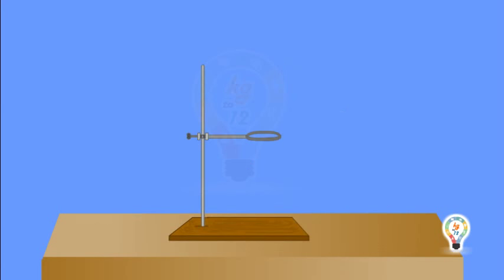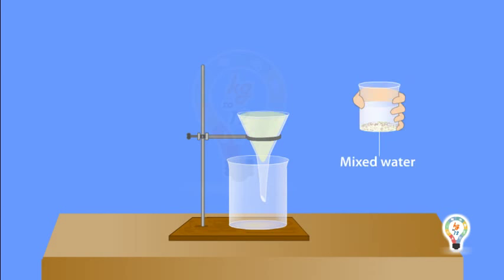To separate the mixture of sand and water by filtration, take a round paper and fold it to make a cone and place it over the flask. Pour water mixed with sand into the funnel.